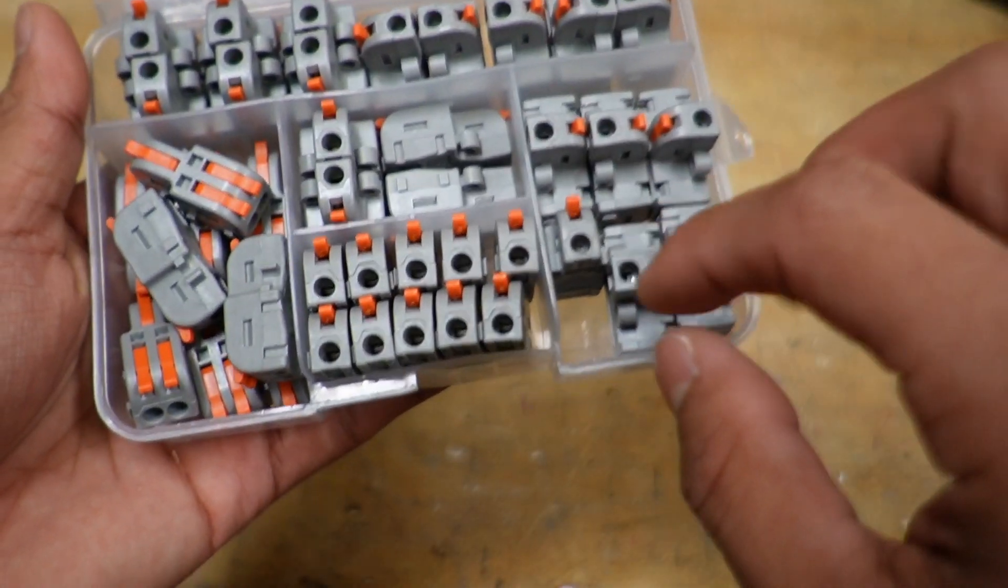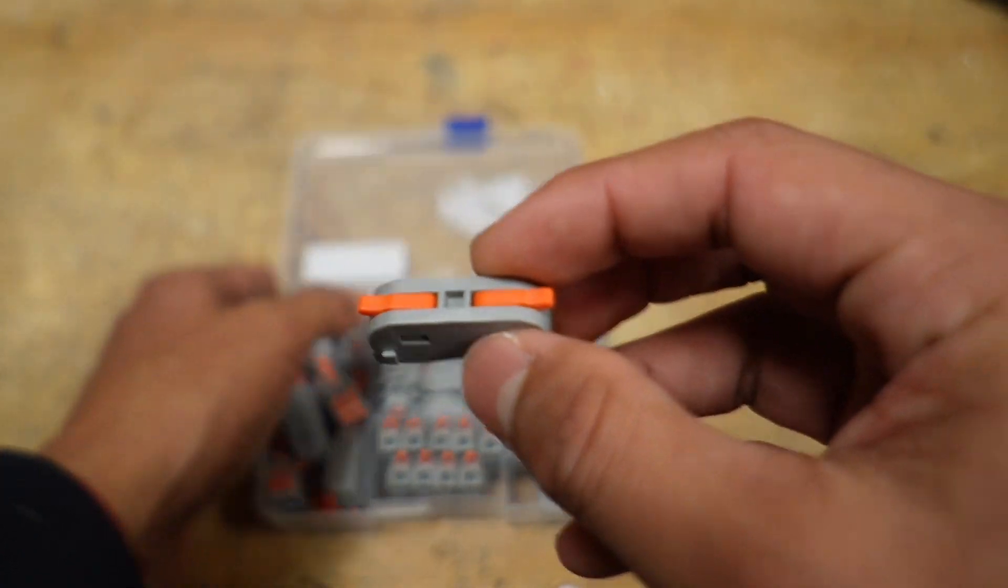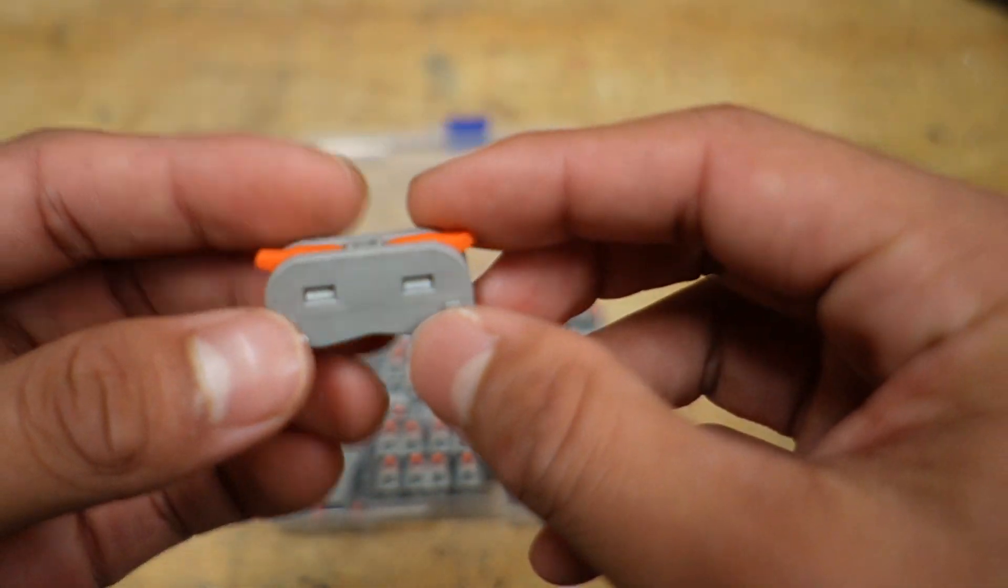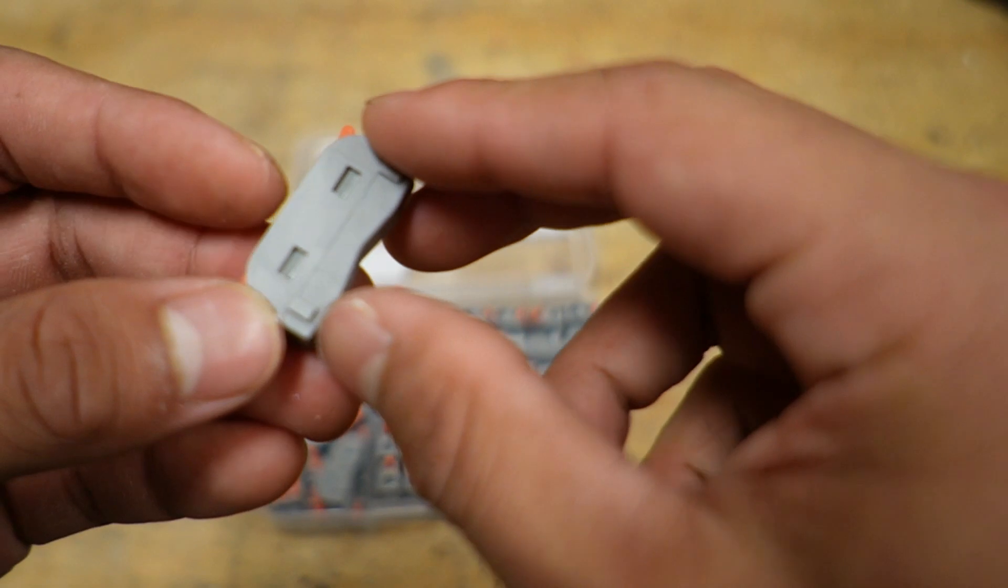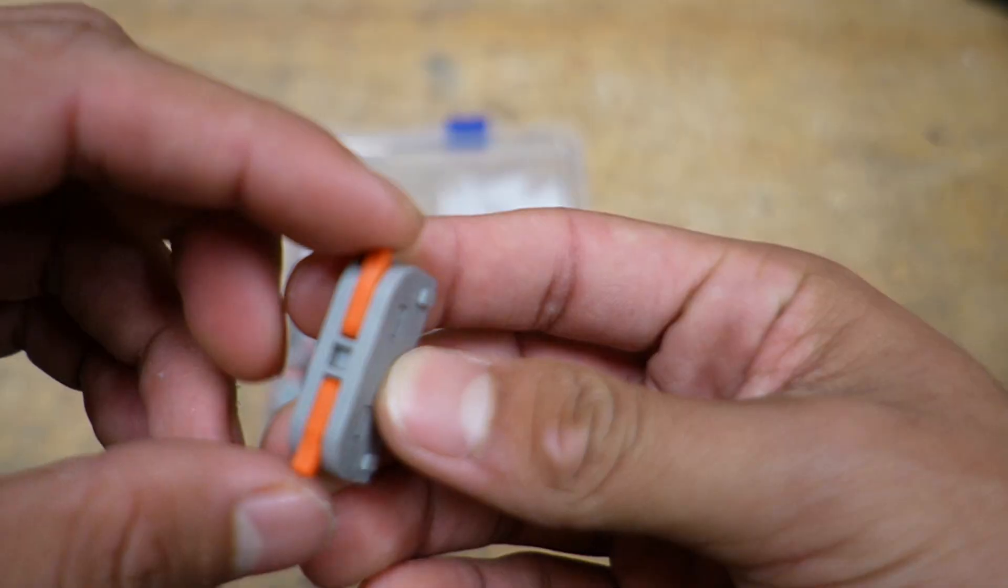It has a bunch of different variations. Right over here in the center, these are the one-to-one connectors, and this thing is really small - it's an inch and a quarter in length. Right here is where the wire goes, and these orange things are the latches.